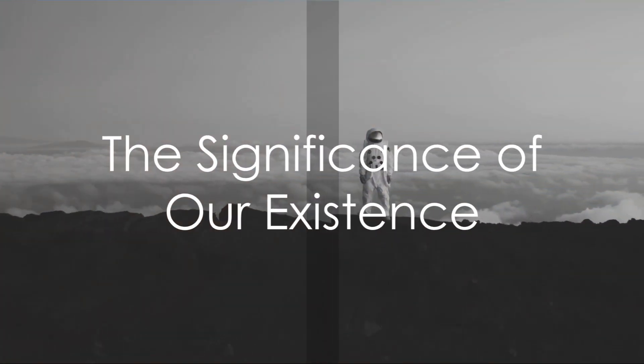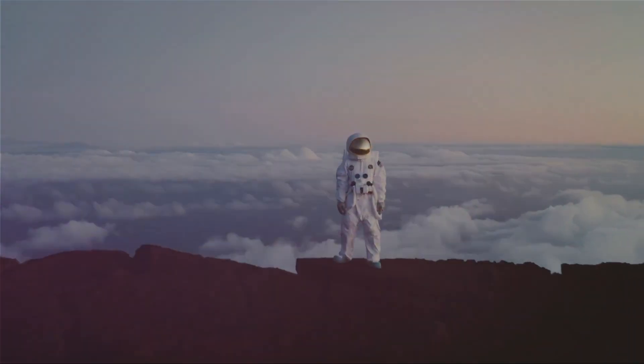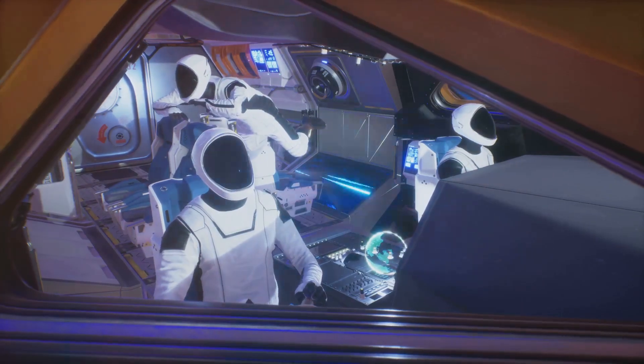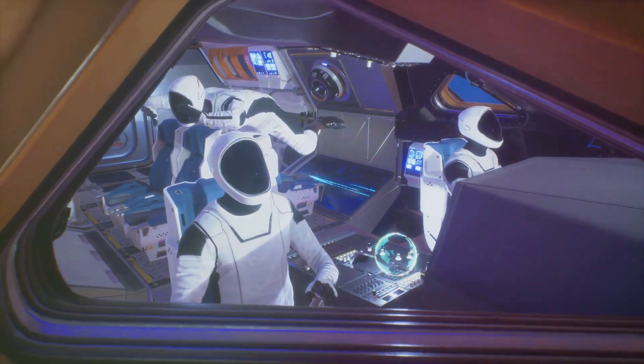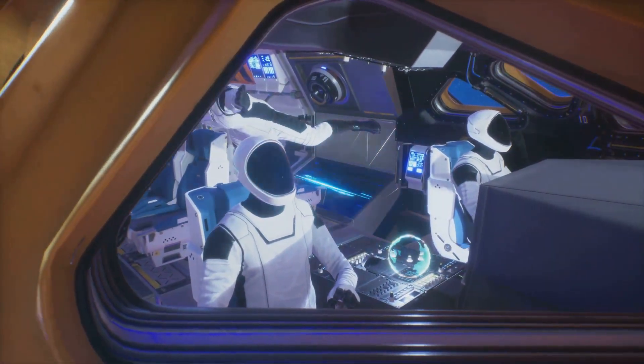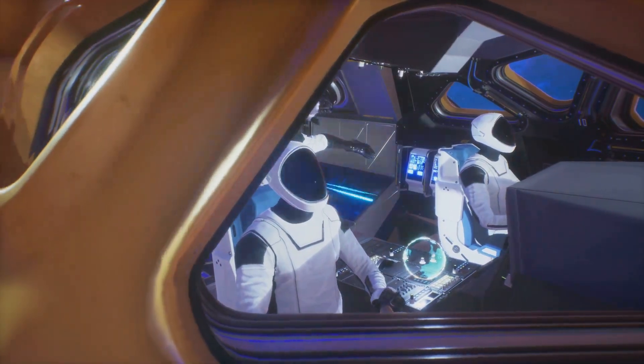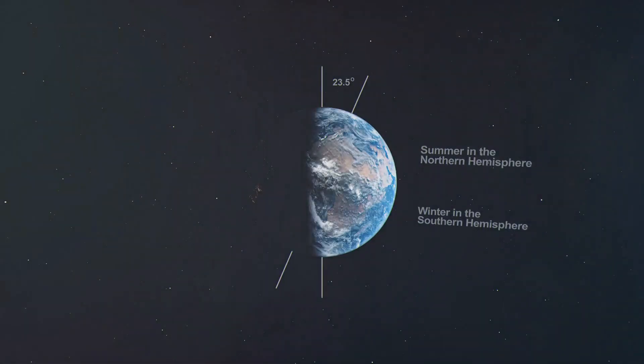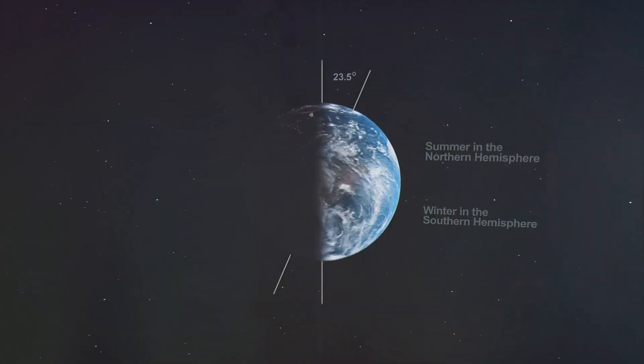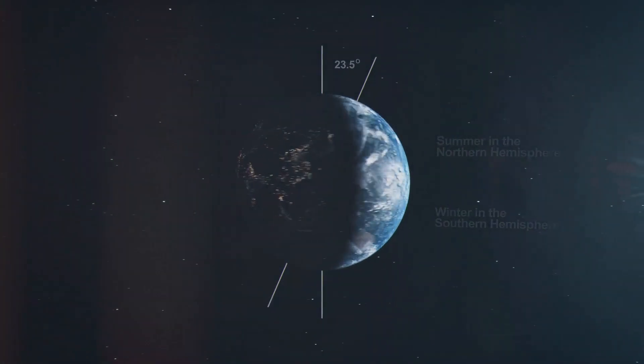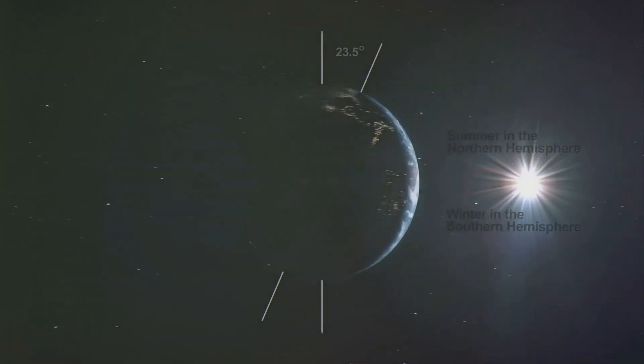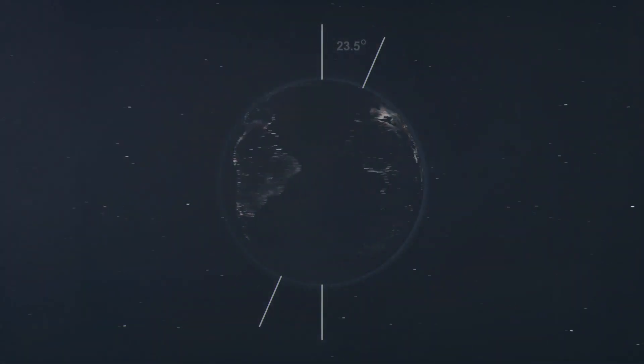In conclusion, the Privileged Planet Thesis presents a compelling case that our existence, and our ability to observe the universe, seem to be shaped by a series of extremely fortuitous circumstances. Extremely fortuitous circumstances which, by all rights, turn the Copernican Principle on its head, and reveal that we inhabit a privileged position within the universe.